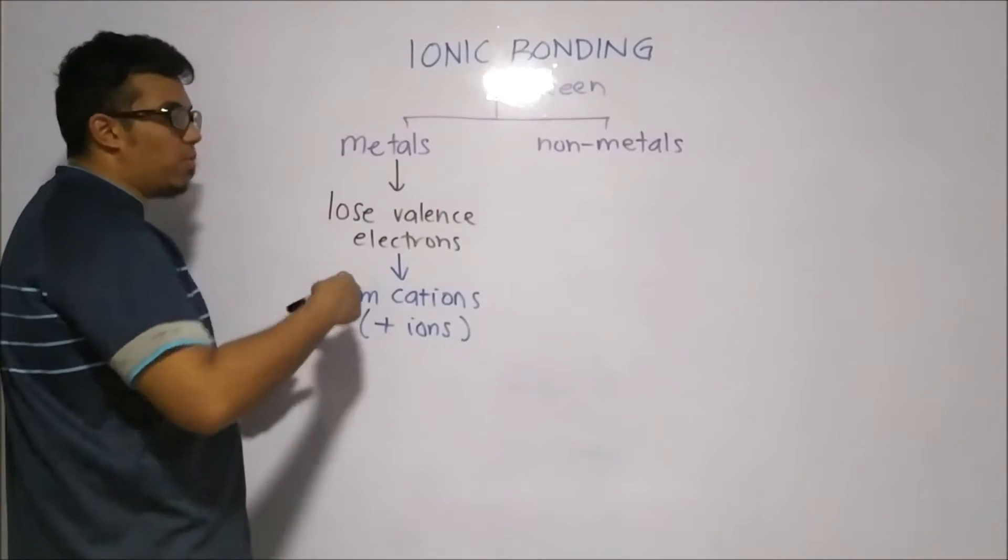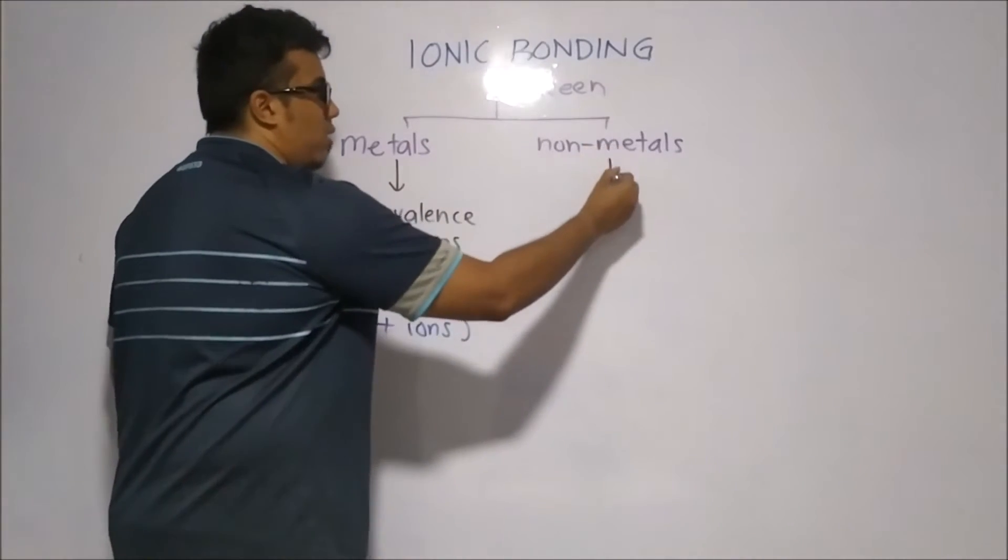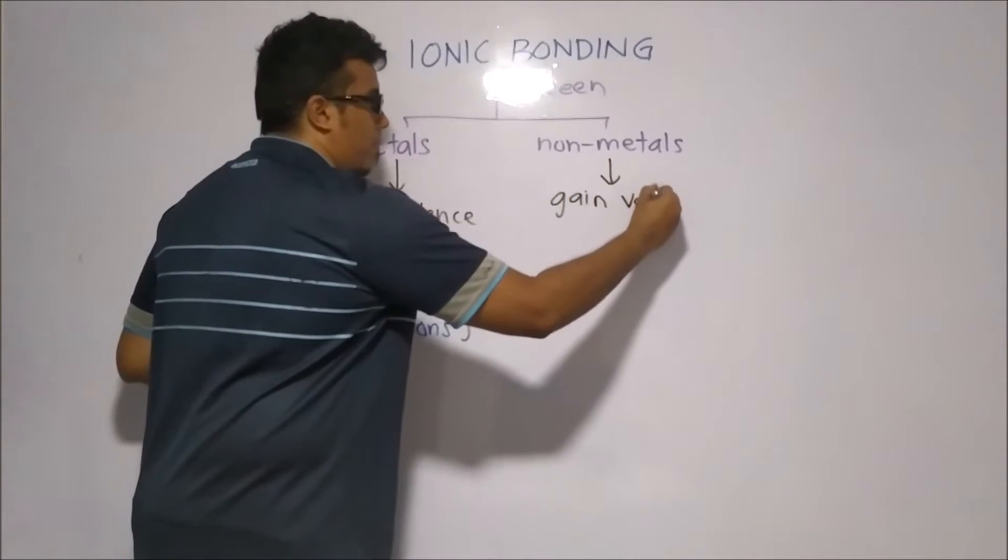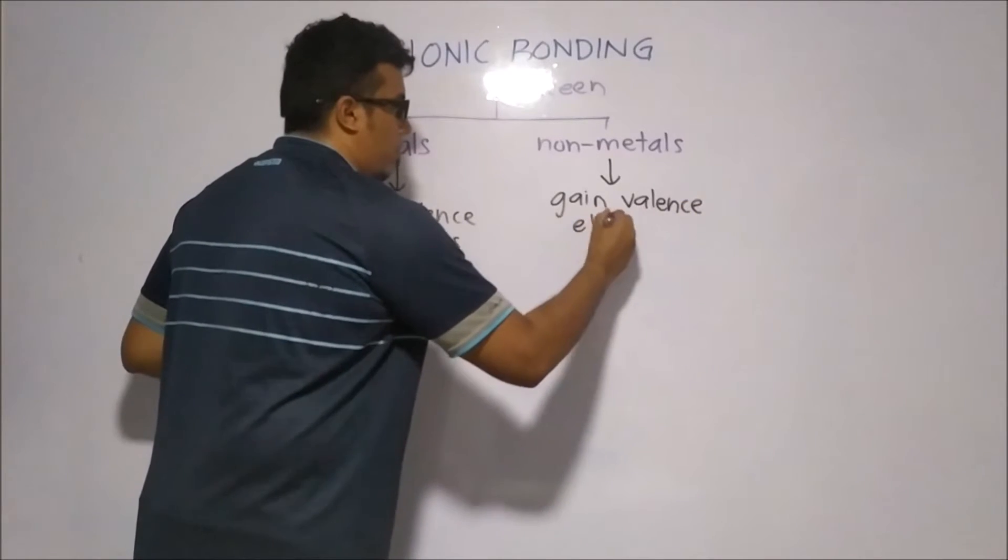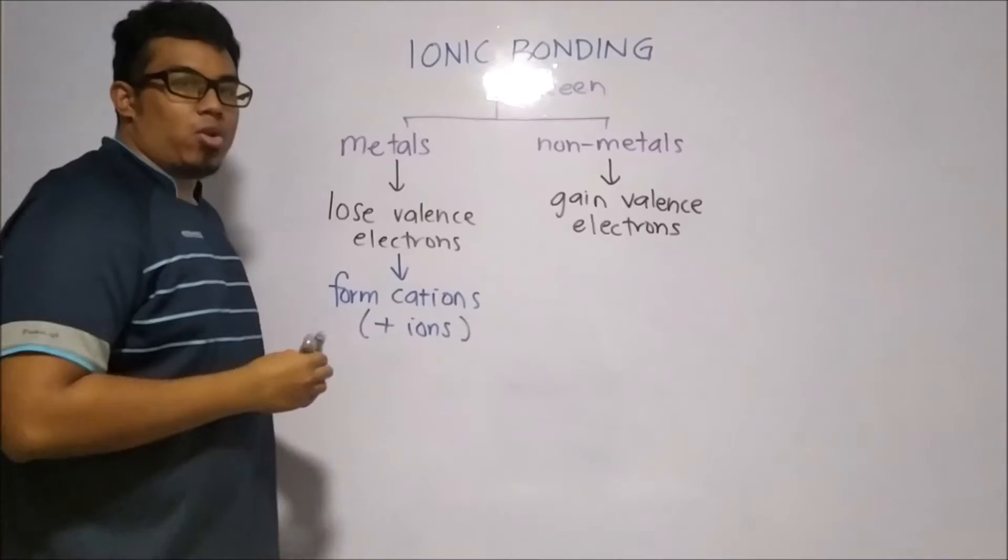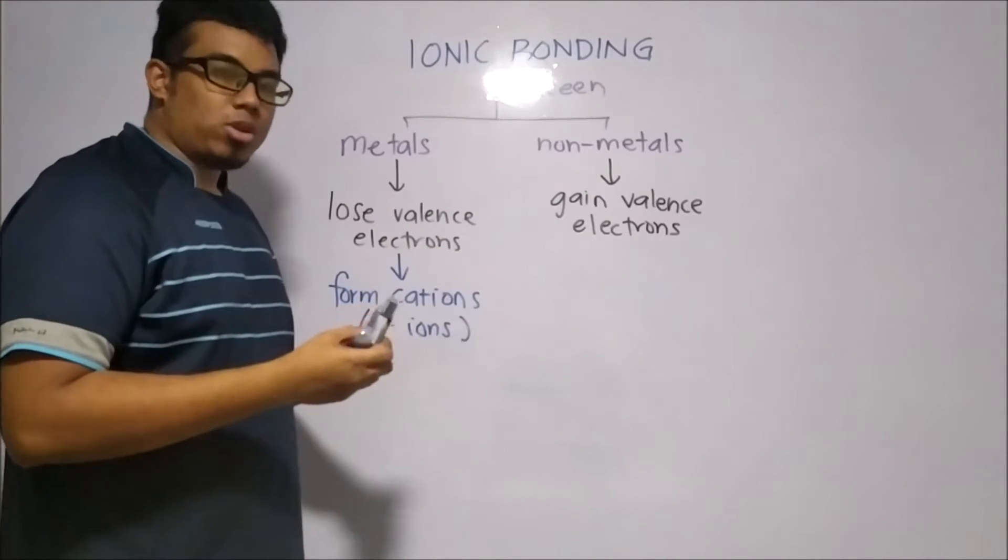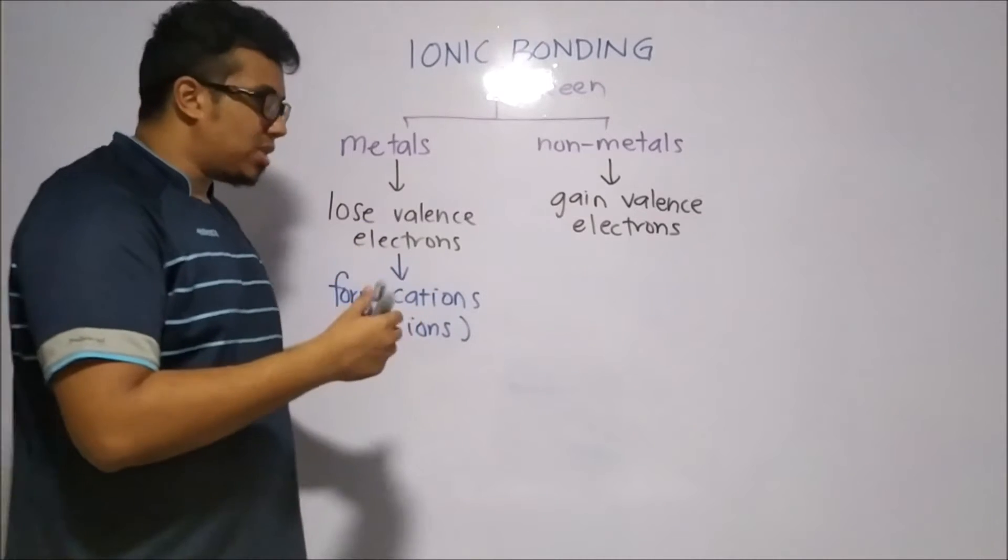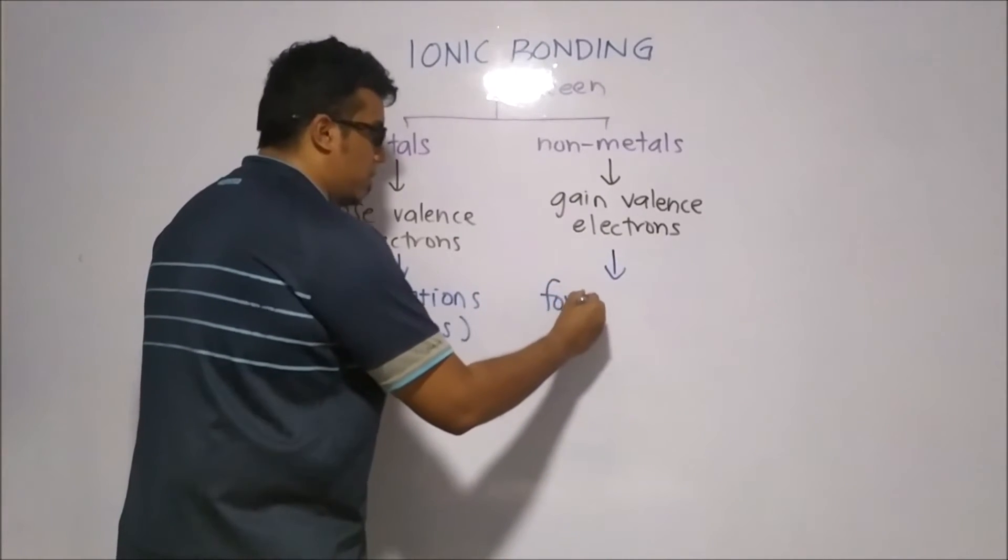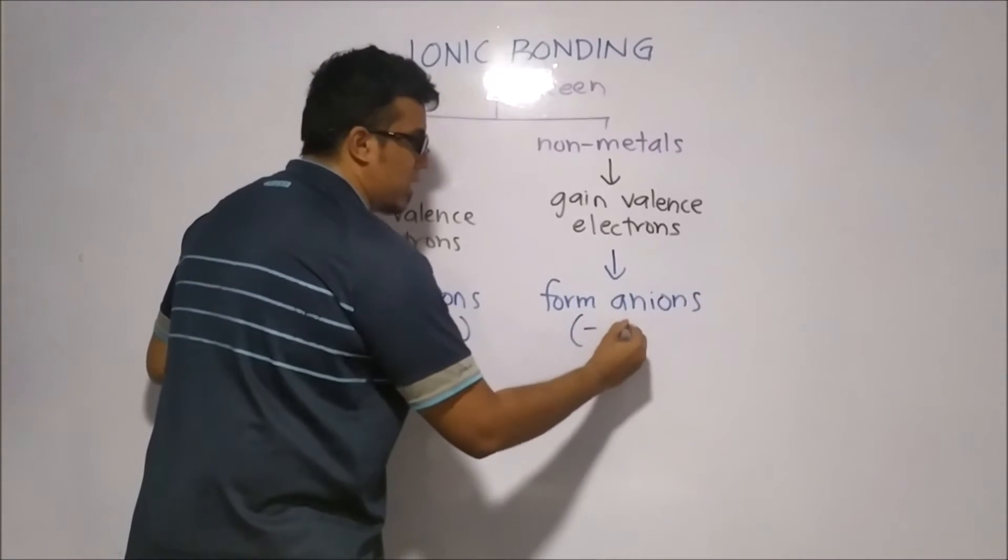So we see metals lose the electrons and they form cations. Doing the same for the non-metals. For non-metals, instead of losing valence electrons, they tend to gain valence electrons. And on the other hand, as compared to metals, when they gain valence electrons, they will have more negative charges and they will form what we call anions, which are negatively charged.